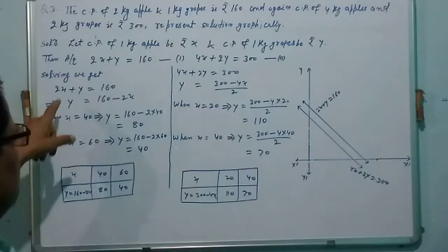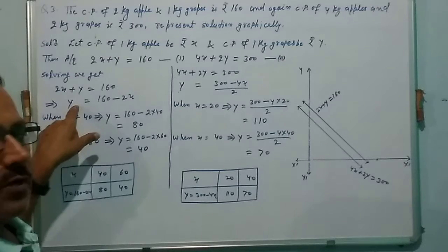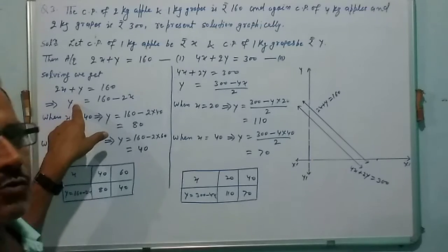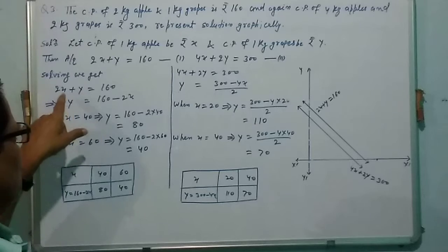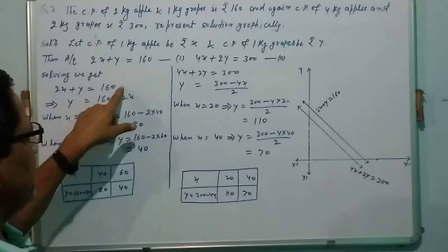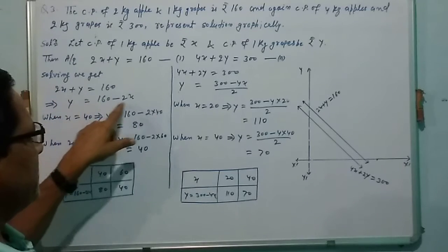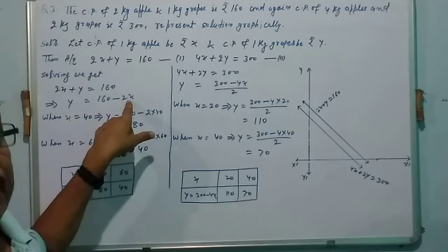Solving this equation, first of all we make this function equation by transposing the term 2x plus y equal to 160, so y equal to 160 minus 2x. This is called function equation.